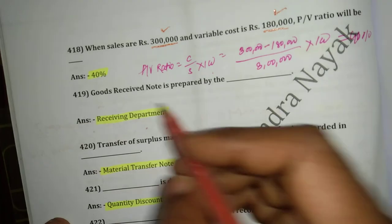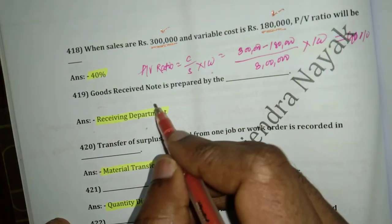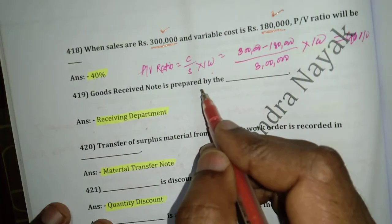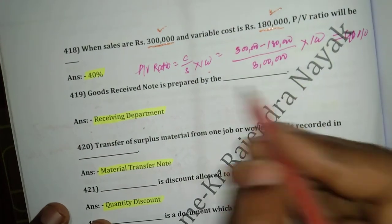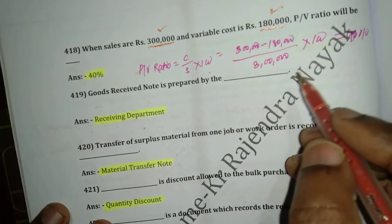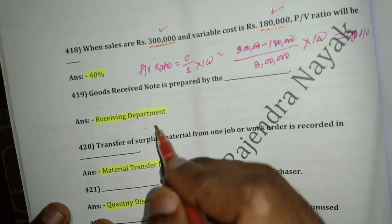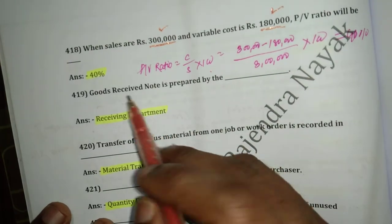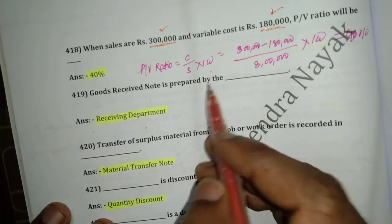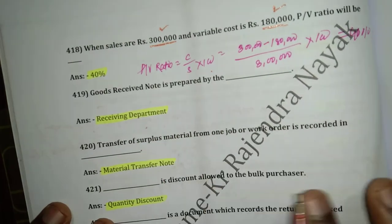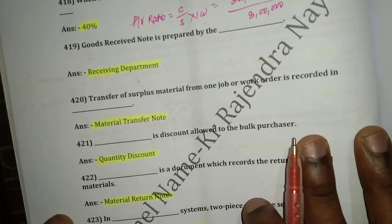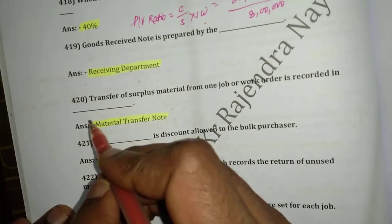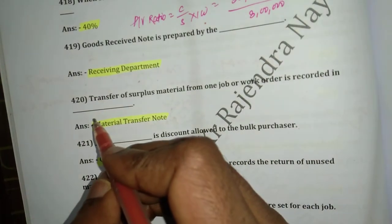Question number 419: Goods Received Note (GRN) is prepared by the receiving department.